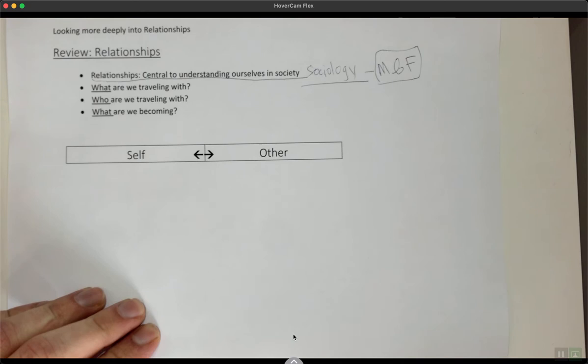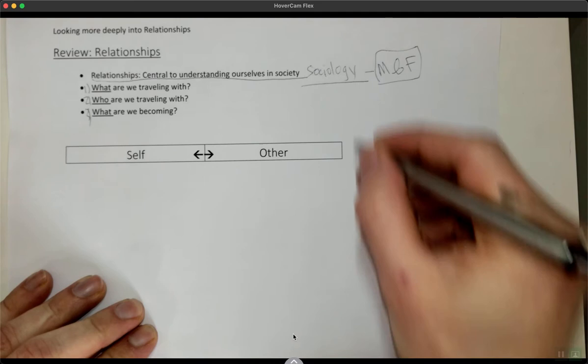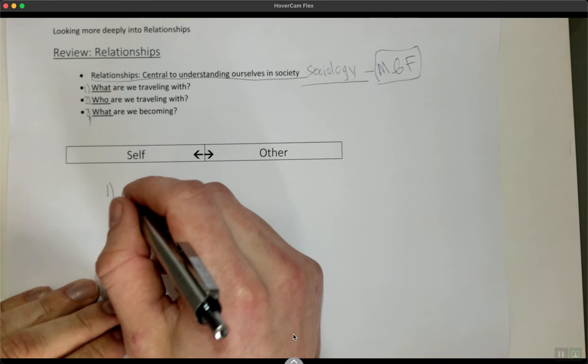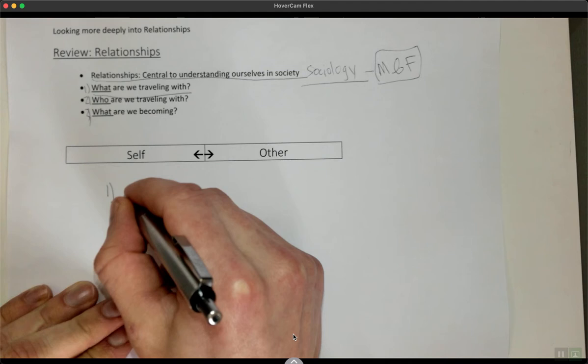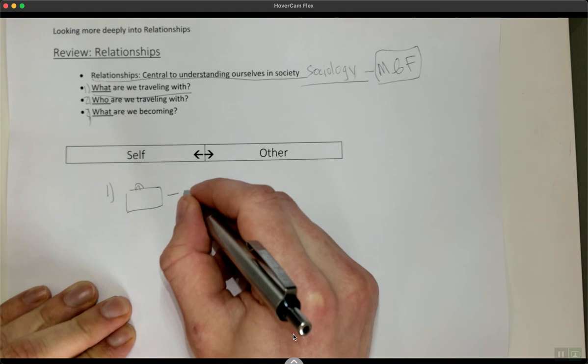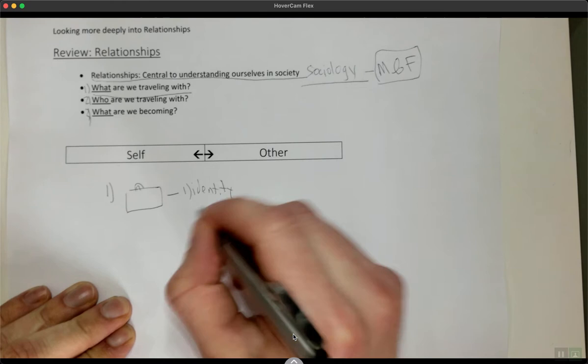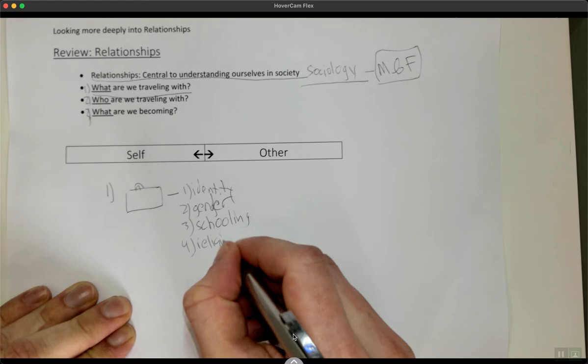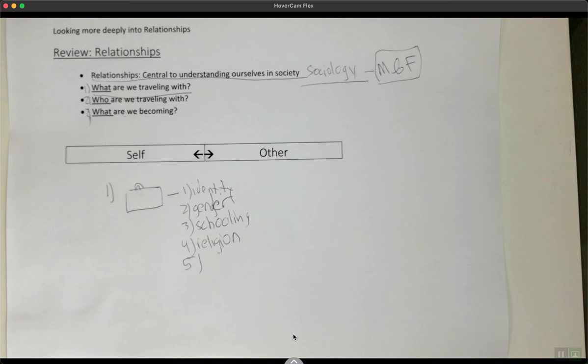So let me do a quick review on the three main points. As we talked in the first lesson, there's no essential piece we're bringing with us. It's not just an individual, but a pair - it's part of the relationship. First, what are we traveling with? The infamous briefcase. What are we bringing with us? For instance, we might be bringing things like identity, our gender, our schooling, our religion, and any other sorts of things that we bring as an individual.